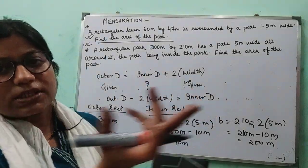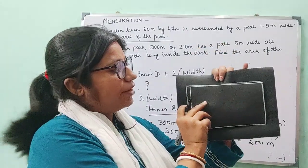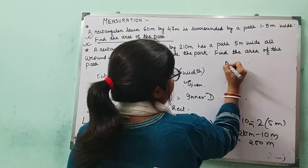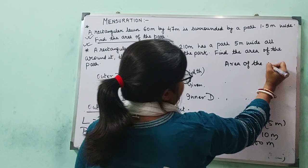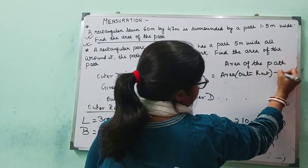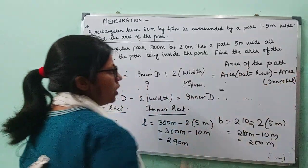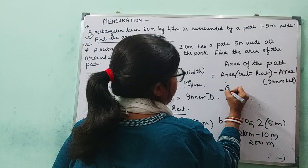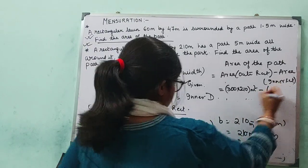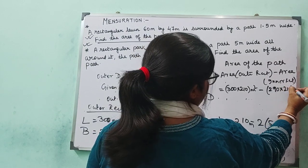Now we have both outer and inner dimensions. The area of the path equals the area of the outer rectangle minus the area of the inner rectangle. The outer rectangle has dimensions 300 × 210 square meters, and the inner rectangle has dimensions 290 × 200 square meters.